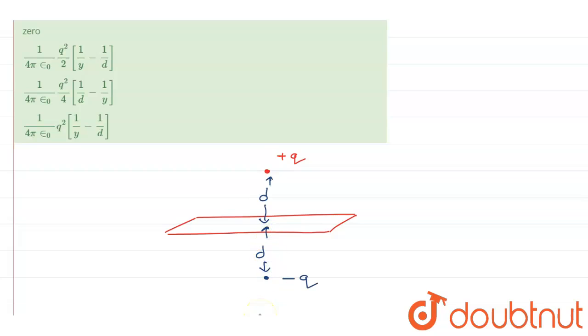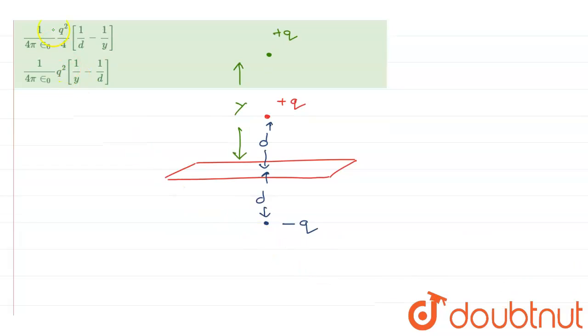So now after that, what they have done is they have changed this position. So they have moved this charge q from a distance d to a distance y. So this charge minus q will also move from a distance d to a distance y.